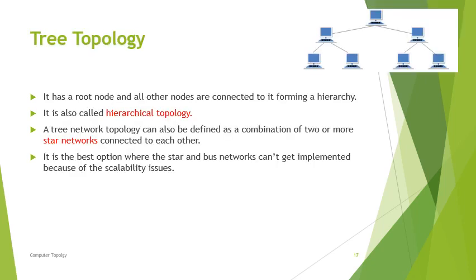In tree topology, there is a root node and all other nodes are connected to it forming a hierarchy, which is why it is also called a hierarchical topology. A tree network can also be defined as a combination of star networks connected to each other, and is a best option when star and bus networks cannot be implemented due to scalability issues.